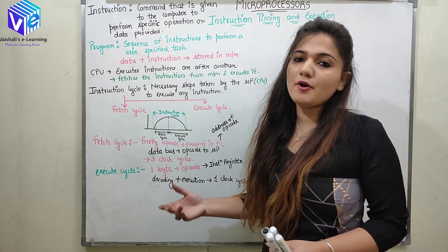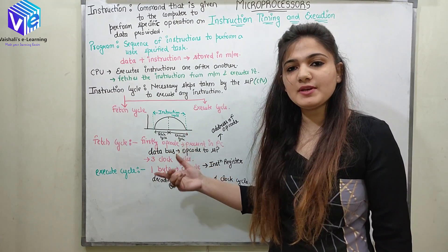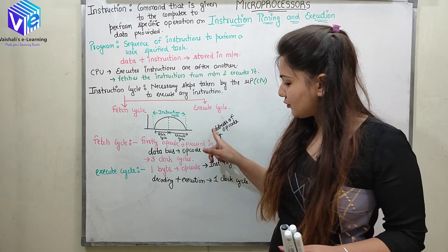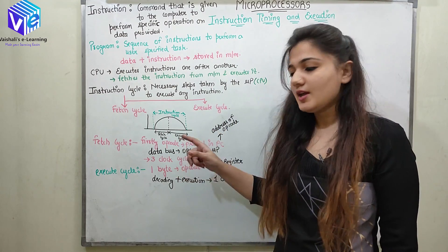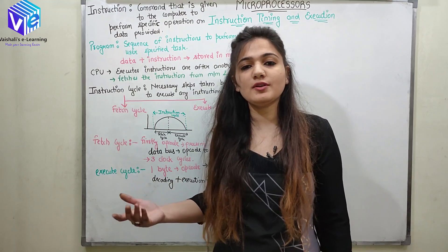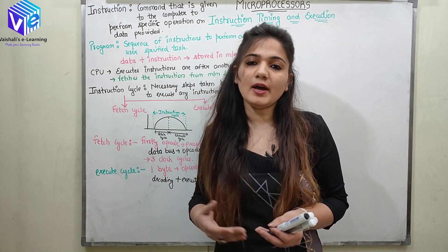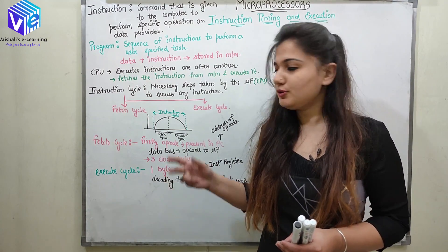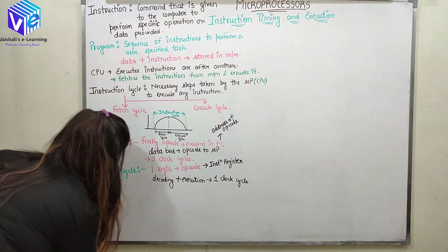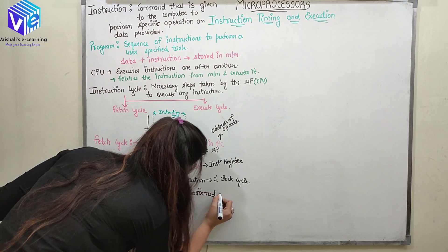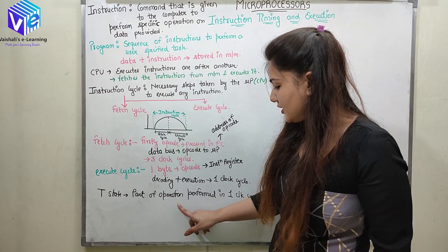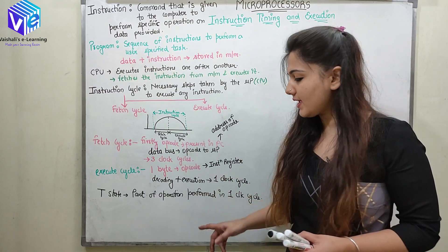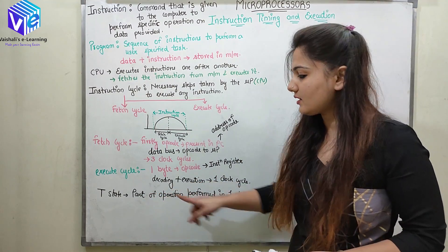In opcode fetch, the opcode is fetched from memory using the address stored in the program counter. In the execute cycle, we can either read data from memory or write data to memory. A T state is the part of an operation performed in one clock cycle. Operations are divided into various clock cycles, and each part performed in one clock cycle is called a T state.